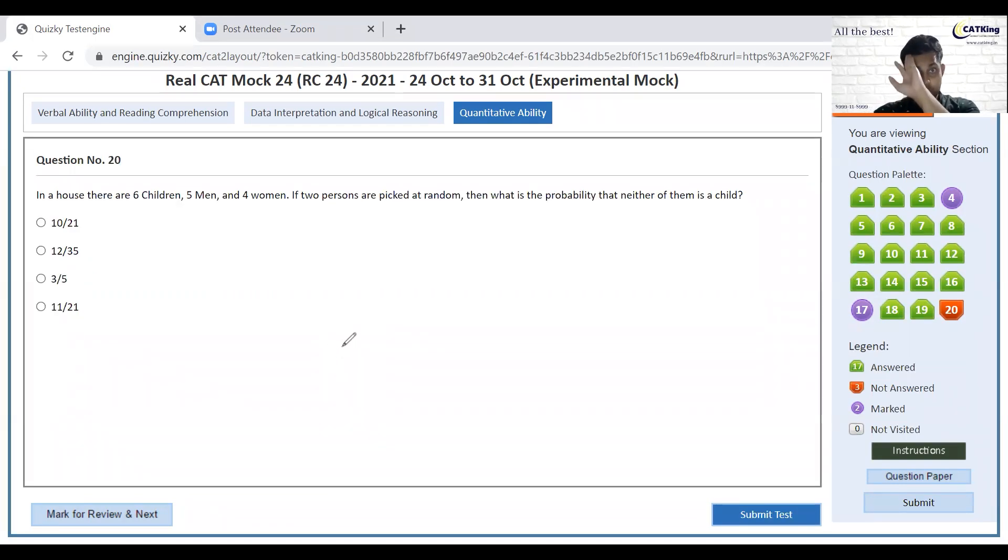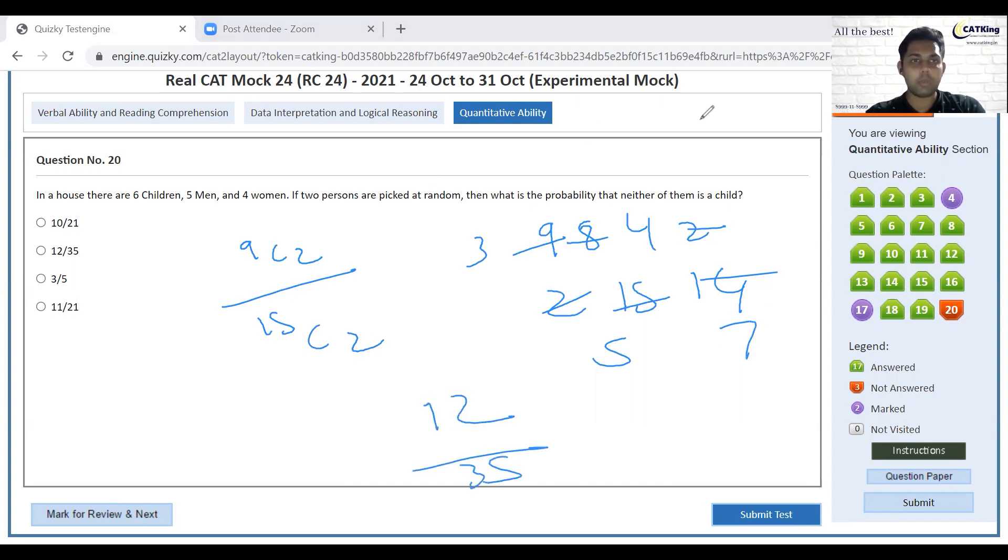6, 7, 5, 1, 4, 1, 2. Normally neither of the children than child. 2. Let's assume 5 plus 4, 9C2, total 11, 15C2. 12 by 35, great.